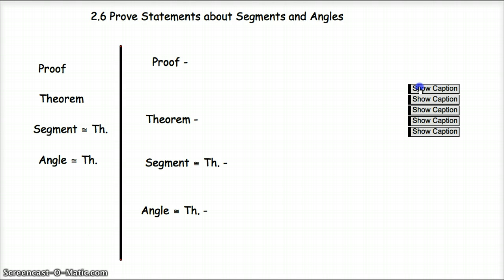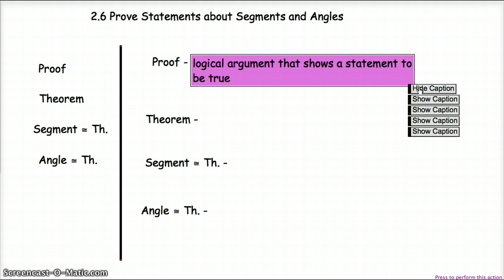So what exactly is a proof when we're talking about a proof? This is the most dreaded thing in geometry, but it's a logical argument that shows a statement to be true. We're kind of like being a math lawyer here. What we're basically doing is we're taking a statement, we have a hypothesis, we're creating a conclusion, and then we're proving it to be true using certain things such as postulates, theorems, and so on. So a proof is a logical argument that shows a statement to be true.